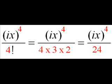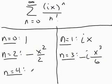The n equals 4 case, I get i to the 4th, which is 1, x to the 4th over 4 factorial. So that's going to give me a positive x to the 4th over 24.